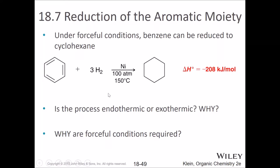Section 18.7 is dedicated to one major reaction, though there are two here. Under forceful conditions, benzene can be reduced to cyclohexane. Each step involves reduction of an alkene — we've seen this before in chapter 8 — but in this case it requires very forceful conditions.